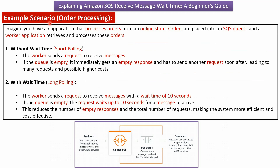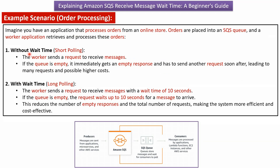Now we will see the second example scenario: order processing. Imagine you have an application that processes orders from an online store. Orders are placed into the SQS queue and a worker application retrieves and processes these orders. Without wait time, which is short polling, the worker sends a request to receive messages. If the queue is empty, the worker immediately gets an empty response and has to send another request soon after, leading to many requests and possibly higher cost.